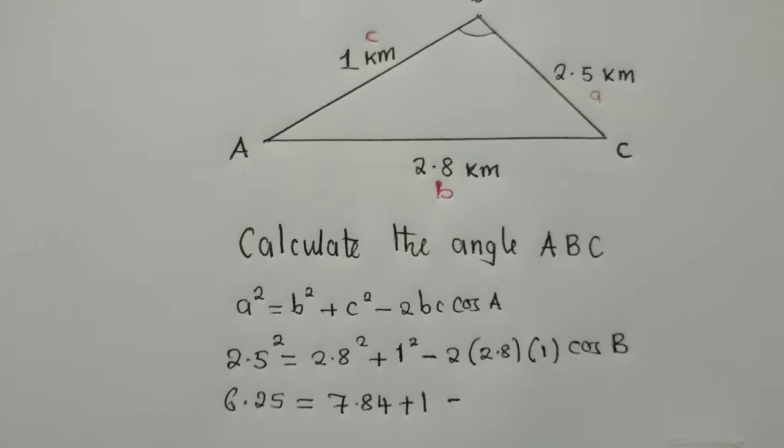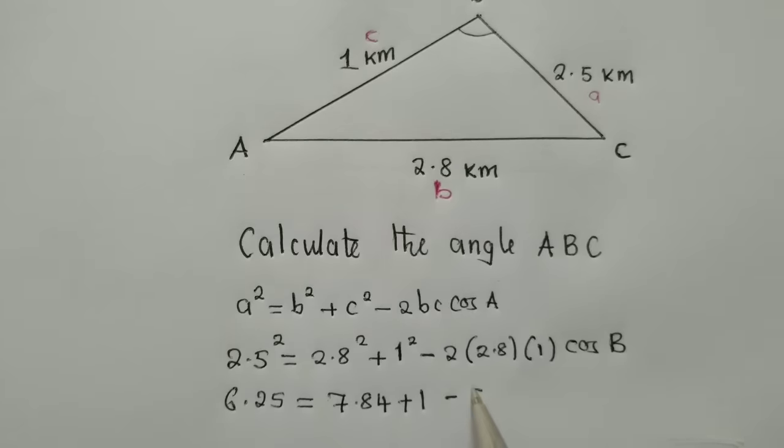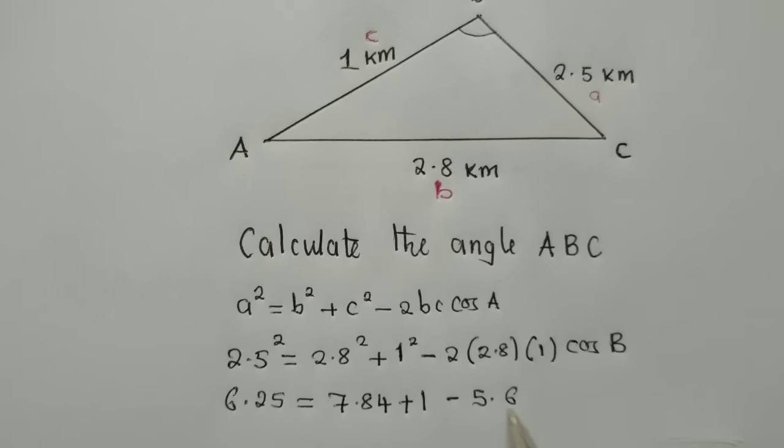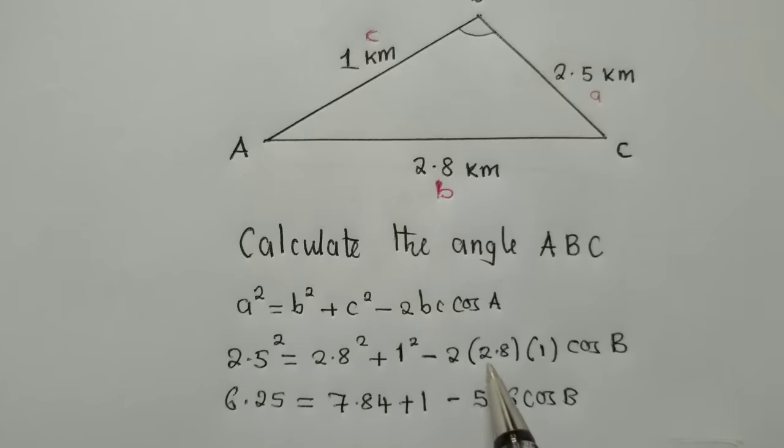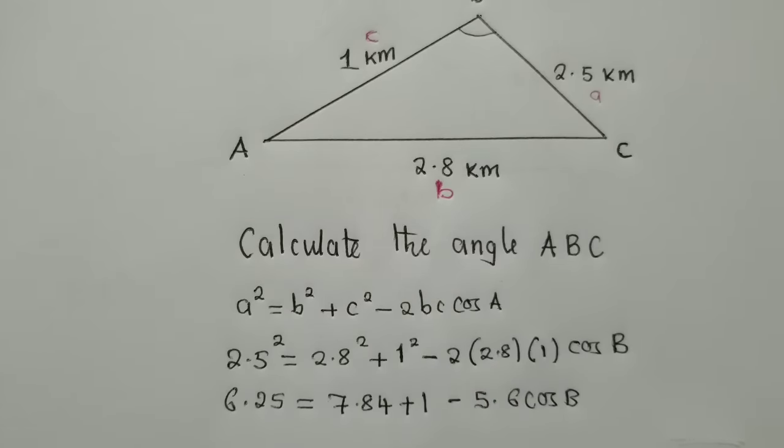when we work out what is here, what are we getting when we multiply everything here? We are getting a 5.6 cos B. So when we multiply 2 times 2.8 times 1, it's 5.6.